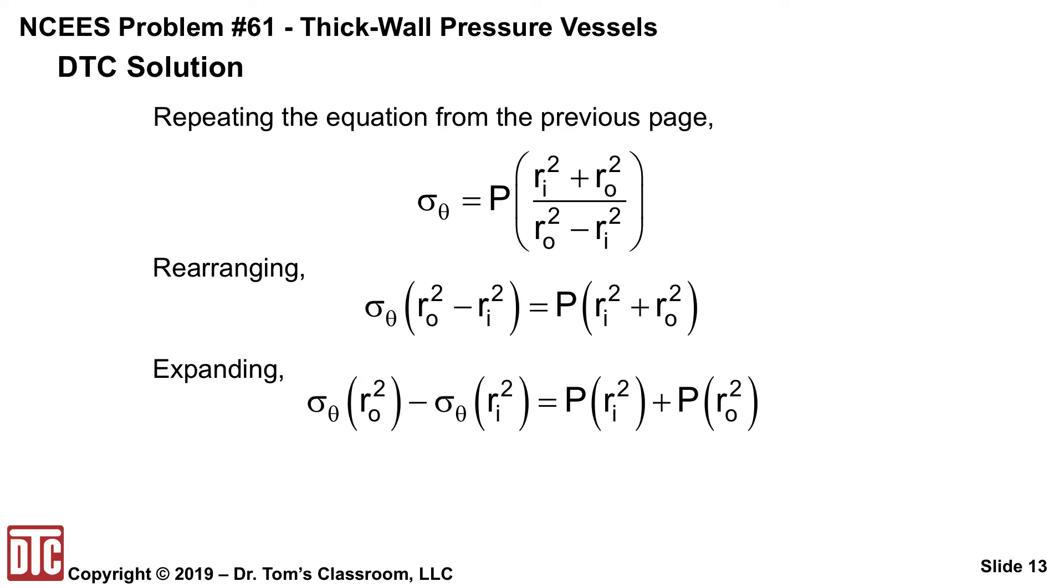We'll expand both sides. Sigma theta times Ro squared minus sigma theta times Ri squared equals P Ri squared plus P Ro squared. And if we collect terms in Ro and Ri, we'll have sigma theta minus P times Ro squared equals sigma theta plus P times Ri squared. We're going to kind of begin to see how this is going to close in on what we're after.